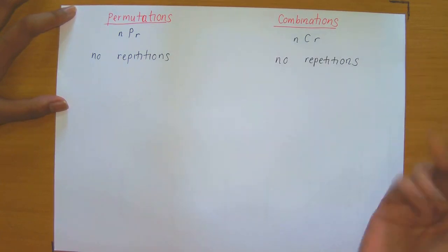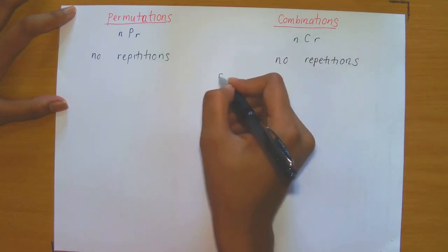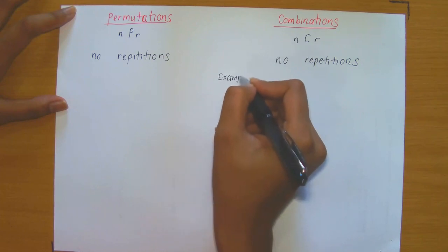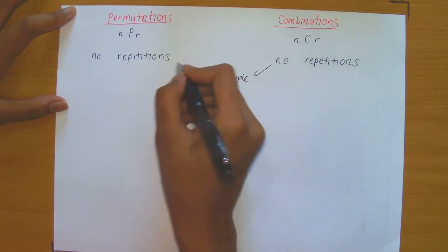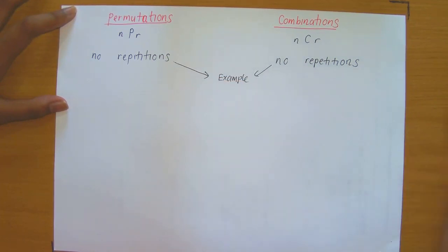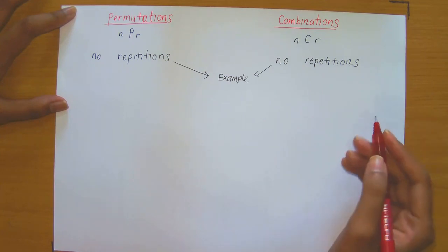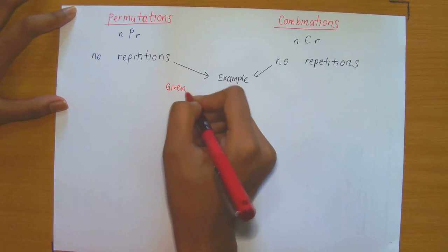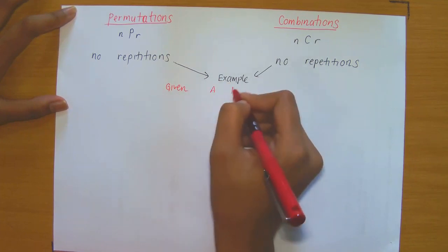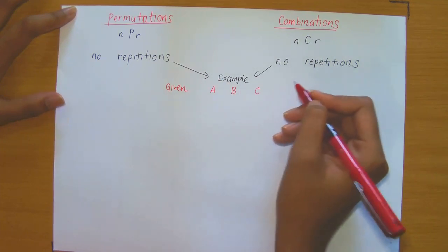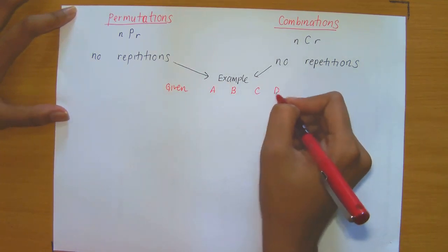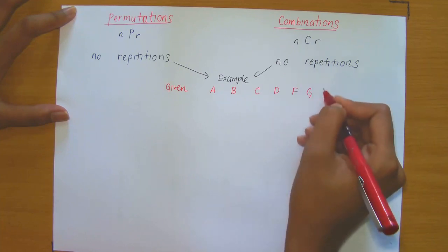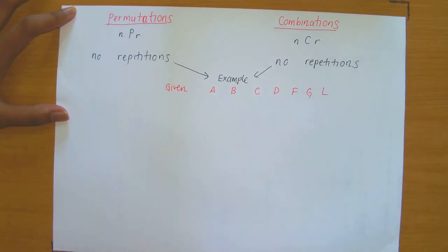So what does this mean? Let's suppose that you are given letters A, B, C, D, F, G, and L, and you are required to select three letters — that is, create a three-letter word or arrangement. It doesn't necessarily have to be an English word; it can be any arrangement as long as we are choosing three.